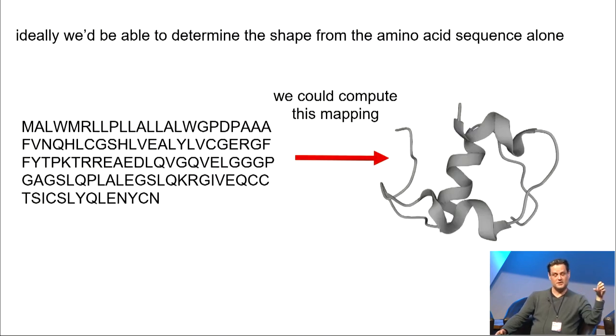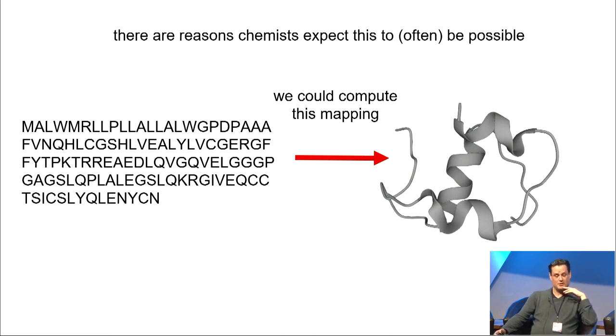Understanding the shape of the protein certainly doesn't tell you everything about its function, but it is a key part in understanding what the protein can do and how it does it. So, ideally, what we'd like to be able to do, and there are sound reasons from chemistry to expect this as often possible, is to determine the shape from the amino acid sequence alone. We'd like to be able to compute that mapping.